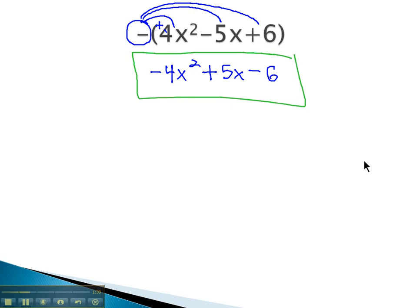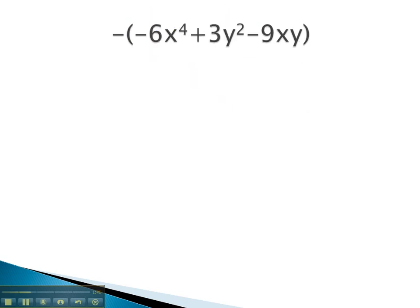Let's take a look at one more example. Here again, we've got that negative or subtraction. It also means opposite in front of a polynomial. So we're going to distribute that opposite through, changing the sign on each term.